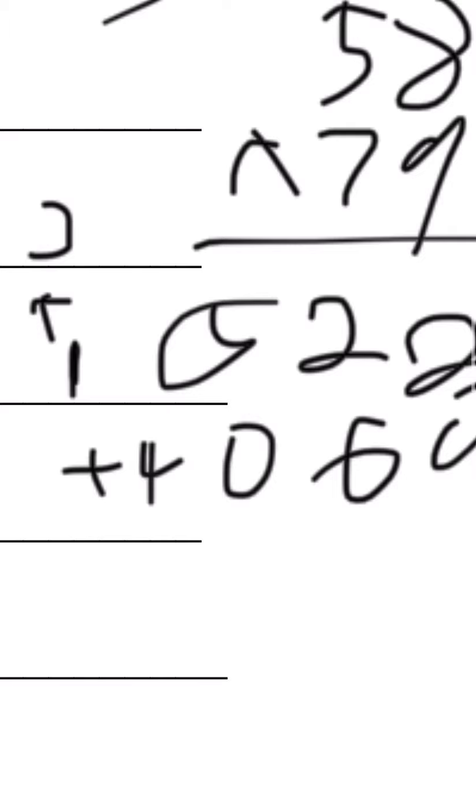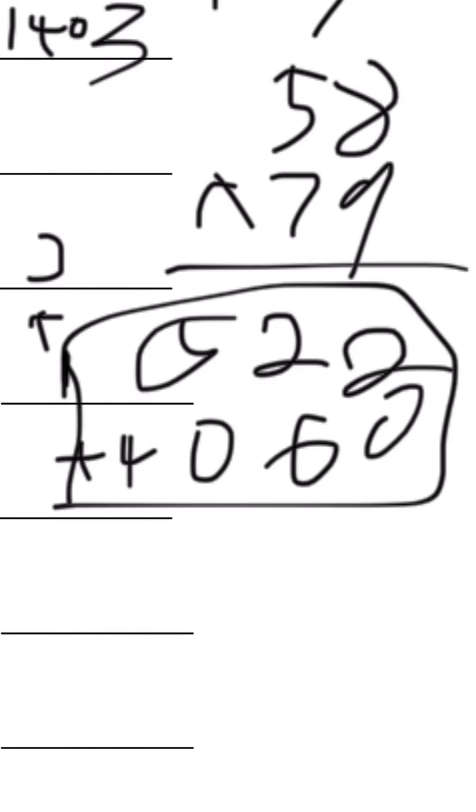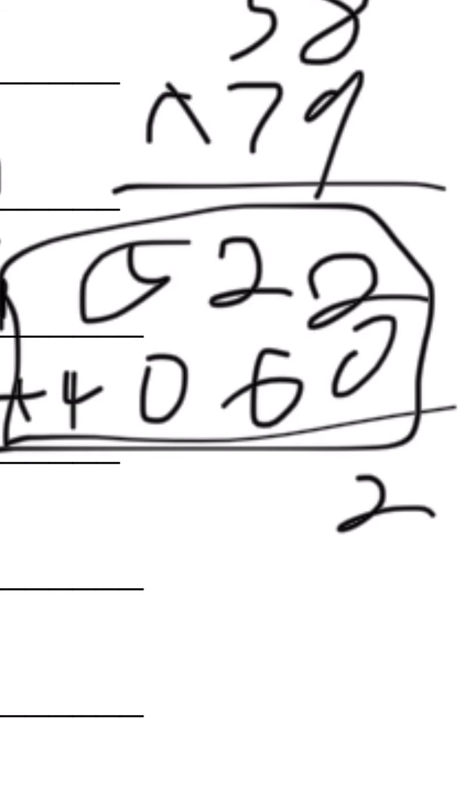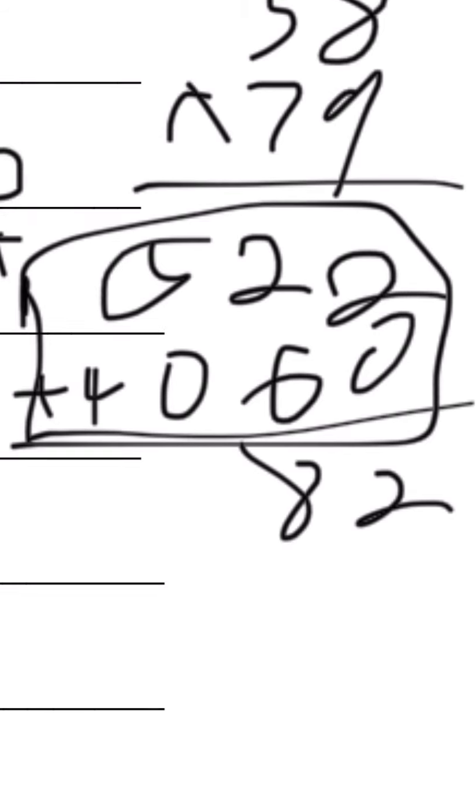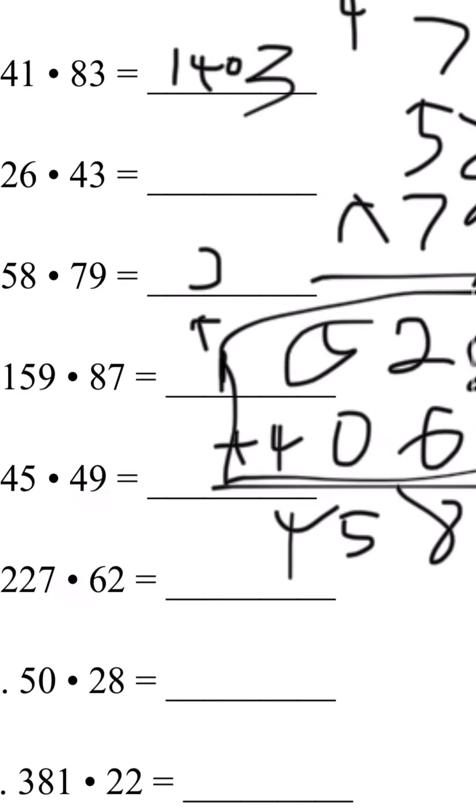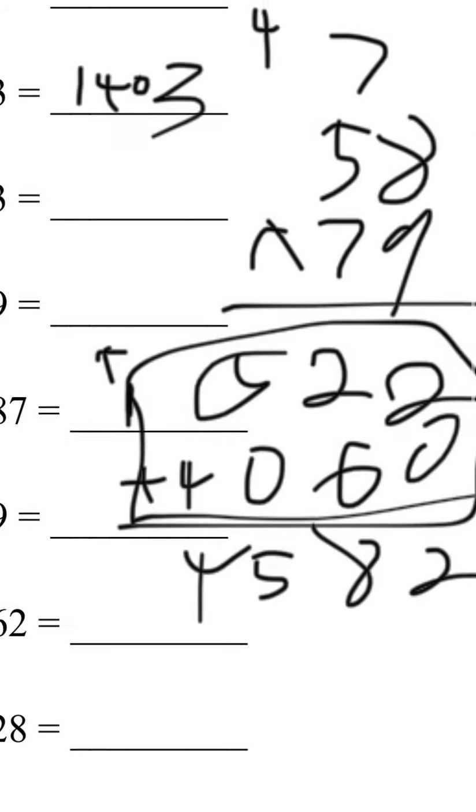We need to add these two numbers again. 2 plus 0 is 2. 6 plus 2 is 8. 5 plus 0 is 5. 4 is 4. Number 6 answer is 4,582.